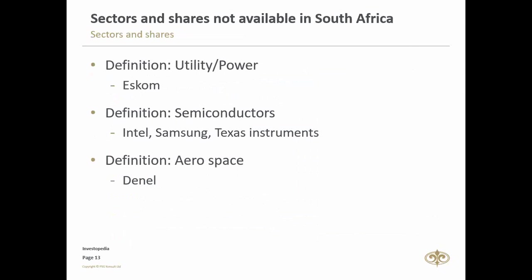The second sector is semiconductors. Semiconductor materials, usually comprising silicon, conduct electricity more than an insulator but less than a pure conductor such as copper or aluminum. Semiconductors are usually very small and complex devices found in thousands of products such as computers, cell phones, appliances, and medical equipment. We do not have this sector in South Africa — no companies like Samsung, Texas Instruments, or Intel.